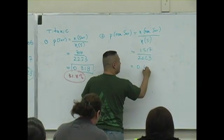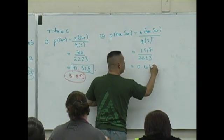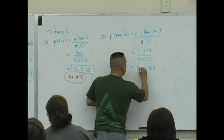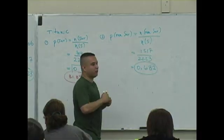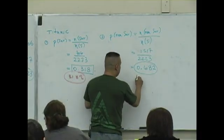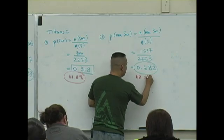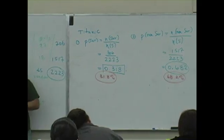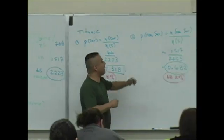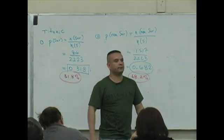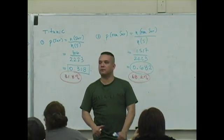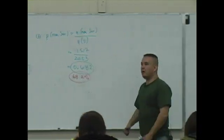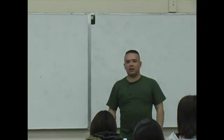This decimal 0.662682, what is this as a percent? This is 68.2%. So what it means is that 68.2% of the passengers aboard the Titanic did not survive.